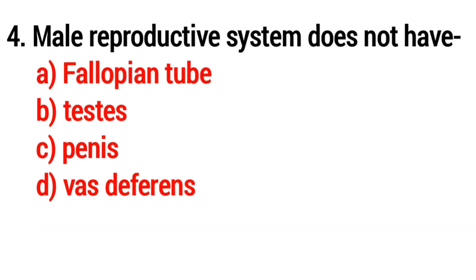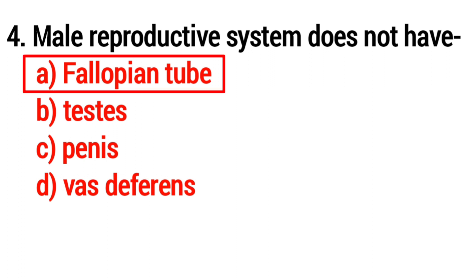Question four: The male reproductive system does not have — the answer is option A: fallopian tube.